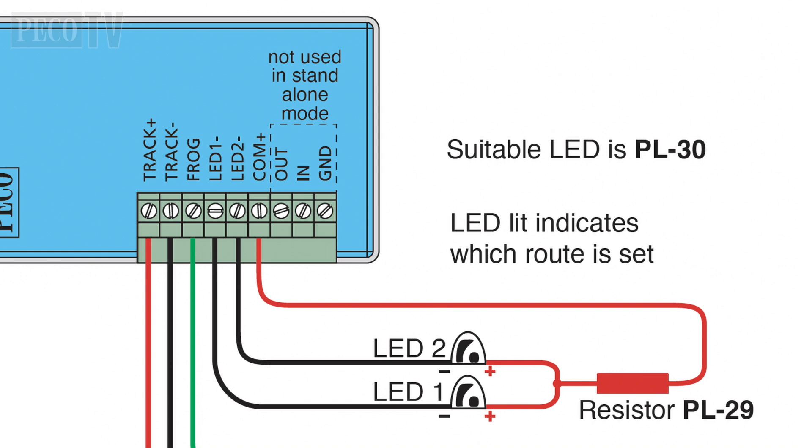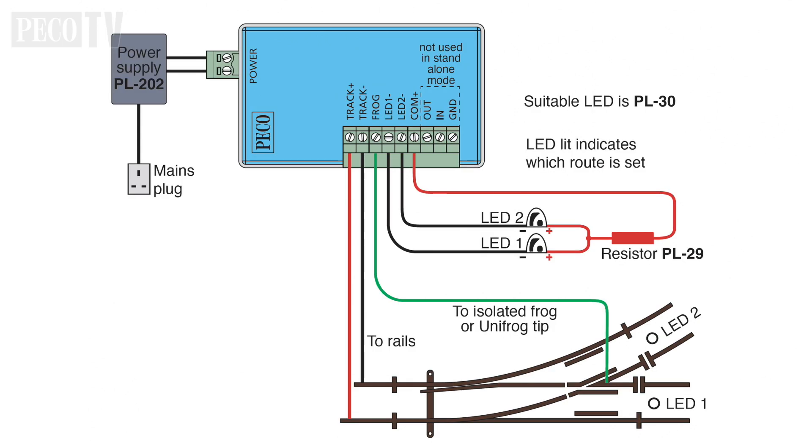You can also use smart frog to change the frog polarity for electro frog and unifrog turnouts without a smart switch system as a standalone unit for both DC and DCC. As shown in the diagram, all you need to do is provide the smart switch with its own independent power supply and connect your track and your frog wires to the unit.